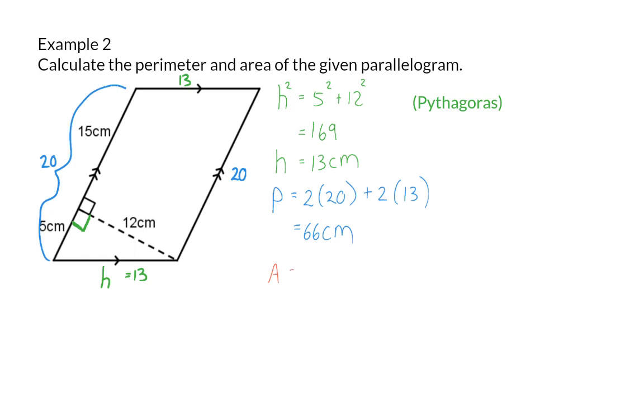For the area of this parallelogram, we will have the base multiplied by the perpendicular height. In this case, the base will be 20 centimeters and the height is 12 centimeters. So the area will be a total of 240 centimeters squared.